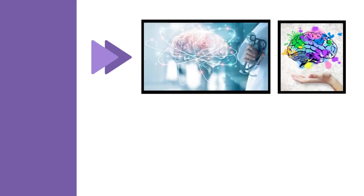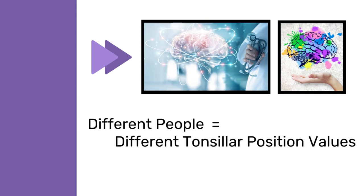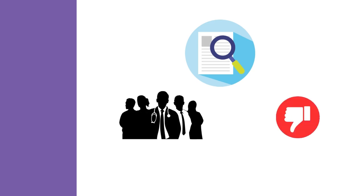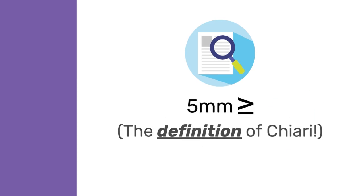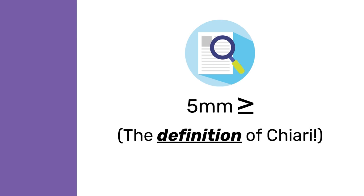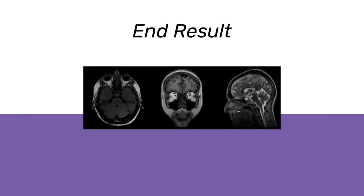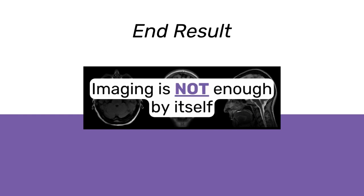Beyond this, actually measuring tonsillar position is part science and part art. This means that different people, even experts, can come up with different tonsillar position values from the same images. Studies have shown that experts can disagree on this critical value by 5 millimeters or more, which is the very definition of Chiari. The end result is that imaging alone, while very important to diagnosing Chiari, is not enough by itself.